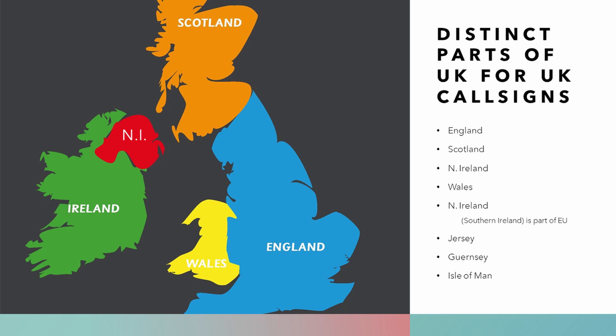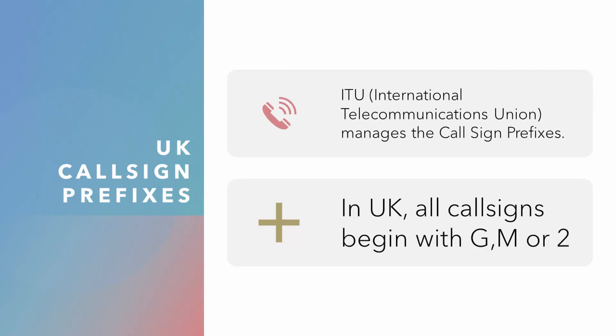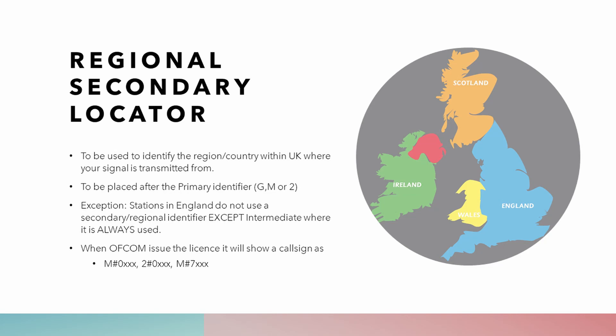Northern Ireland is shown here in red. Southern Ireland, which is part of the EU, is green. UK call sign prefixes are determined by the ITU, the International Telecommunications Union. In the UK, all call signs begin with either G, M or the number 2. Additional characters are used in the call sign to identify the region or country within the UK where your signal is transmitted from.